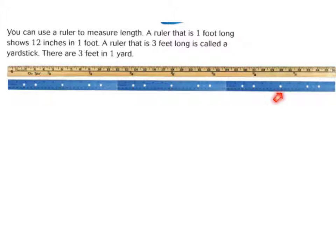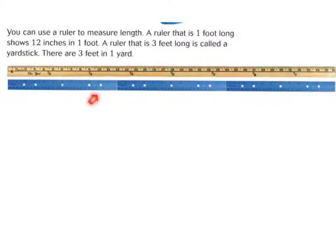If you look, 3 of our rulers — which are also equal to 1 foot — this is 2 feet, and then 3 feet is equal to 1 yard. So 1 yard equals 3 feet, and there are 12 inches in 1 foot. That's very important for you to remember: 3 feet in 1 yard, and 12 inches in 1 foot.